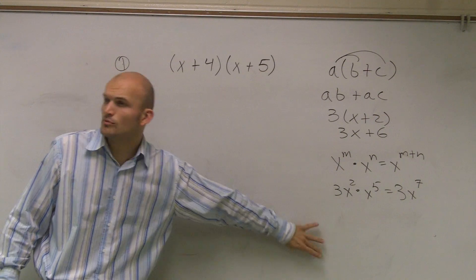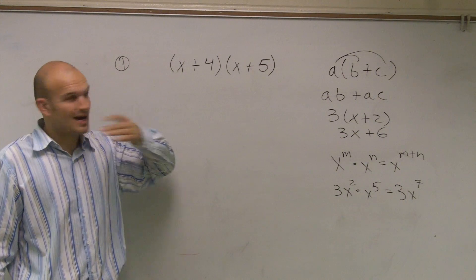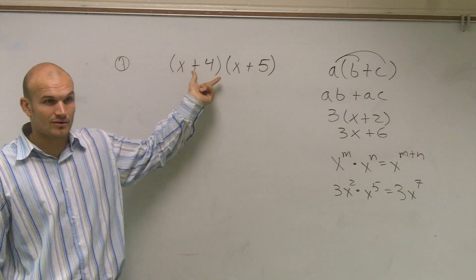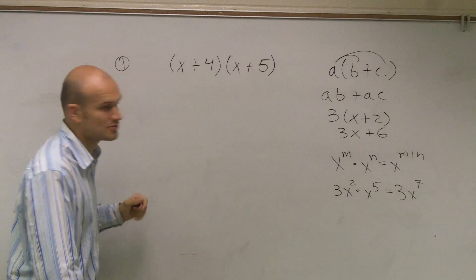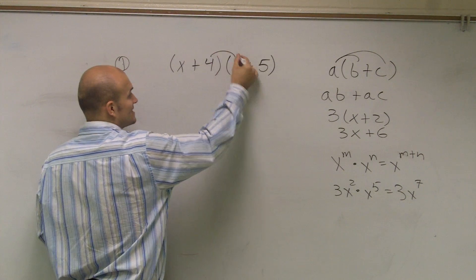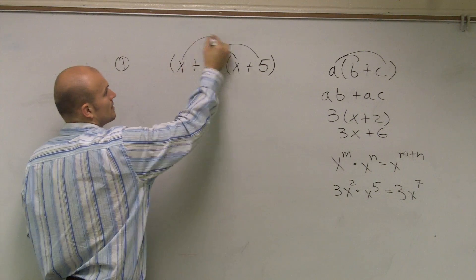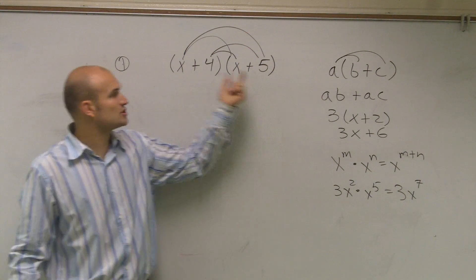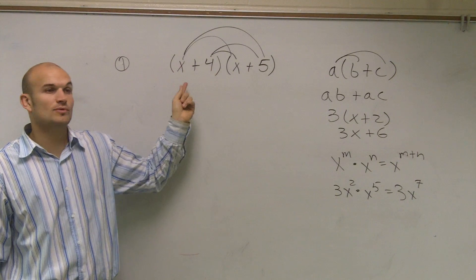Now when we have a binomial, you notice you say, well, I don't have just one number outside — I actually have a binomial. The first method I'm going to show you is the distributive property method. You need to multiply each term by both of your terms on the other side, so you're going to apply the distributive property twice — once with one term and then with the other term.